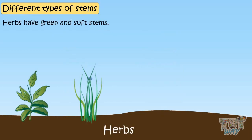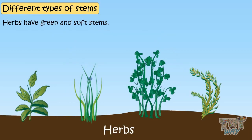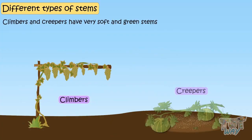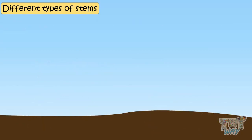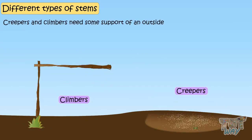Herbs have green and soft stems. Climber and creepers have very soft and green stems that can't keep the plant upright. Creepers and climbers need some support of an outside object to climb up or crawl along.